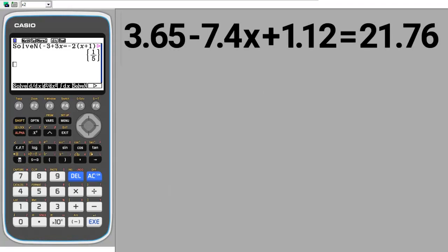Problem number 3. However, we need to make sure that we have the Solve In. Press the F5 button for the Solve In. 3.65 minus 7.4x, the x is here, plus 1.12 equals, equals is the Shift button, then the Decimal Point button, 21.76.